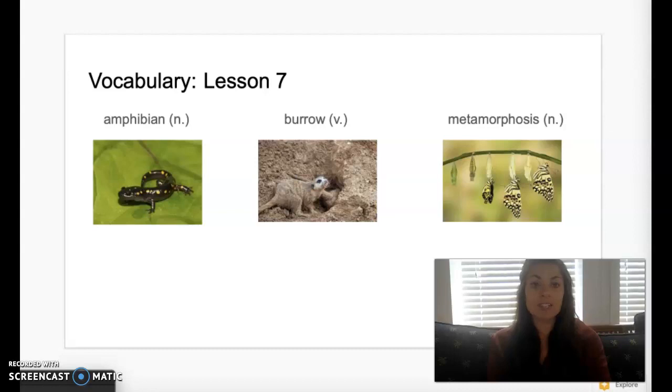Our first vocabulary word for today's story is amphibian. An amphibian is an animal that can live on both land and water. Our second vocabulary word is burrow. Burrow means to make a hole or passage into or under something. And our last vocabulary word is metamorphosis. Metamorphosis is the process by which some young animals change form as they become adults.